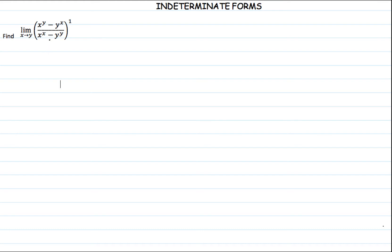The first thing to do is try to solve this function in the conventional way — by replacing x with y. When we do that, we get y raised to y minus y raised to y in the numerator, divided by y raised to y minus y raised to y in the denominator. This gives us a situation of 0 by 0.